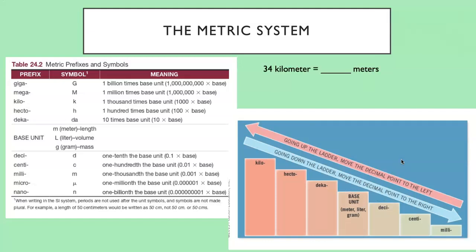Let's look at some other examples. 34 kilometers would equal how many meters? Go ahead and put it on pause and see what you get. Alright, so 34 kilometers. We want to go down to meters, so we have to add zeros. We're moving the decimal to the right. 34,000 meters.